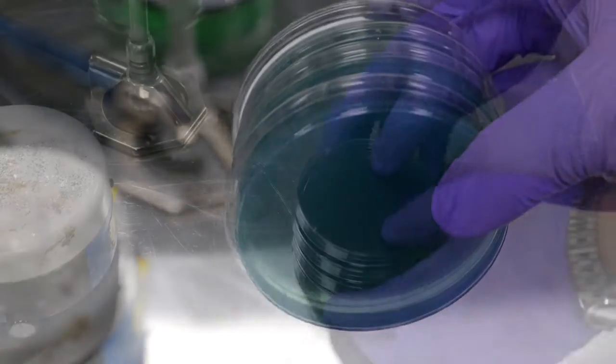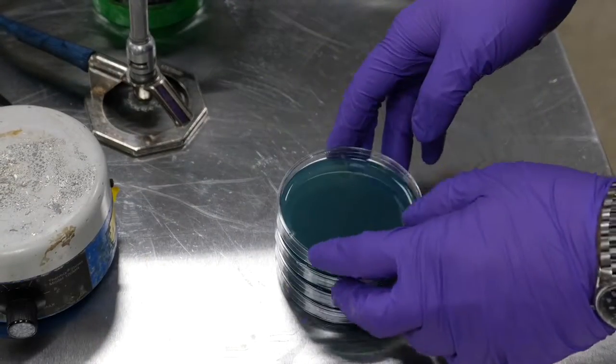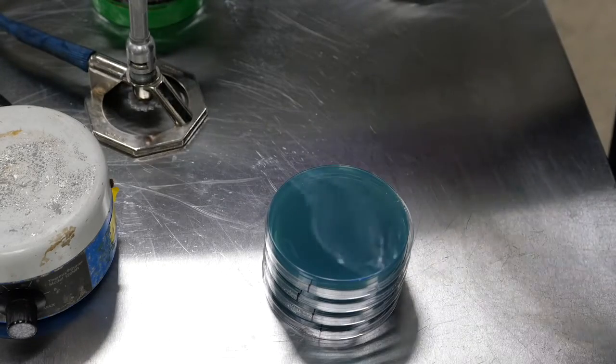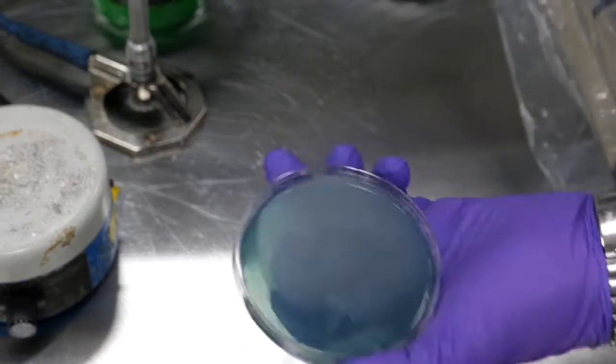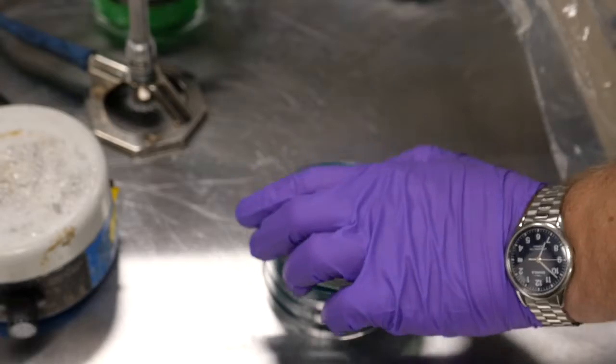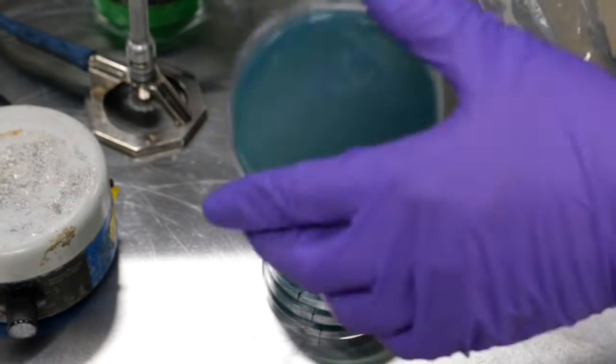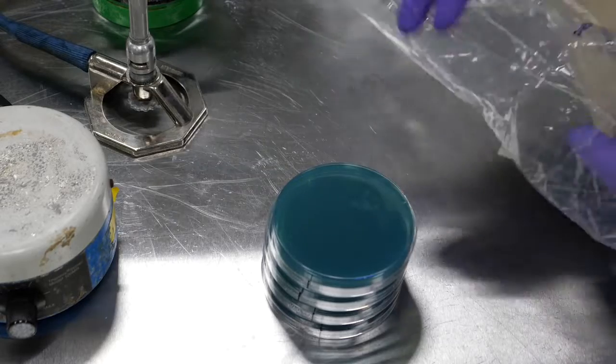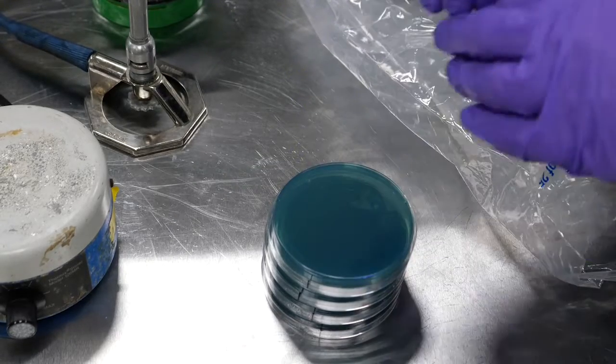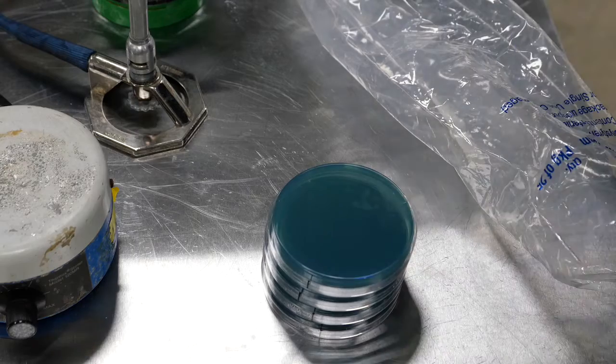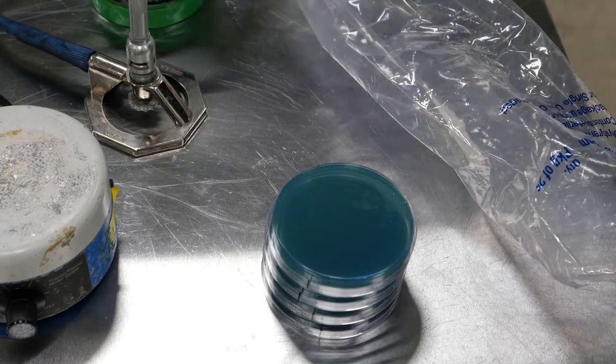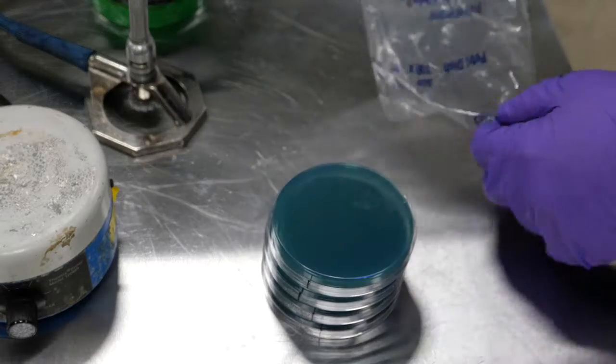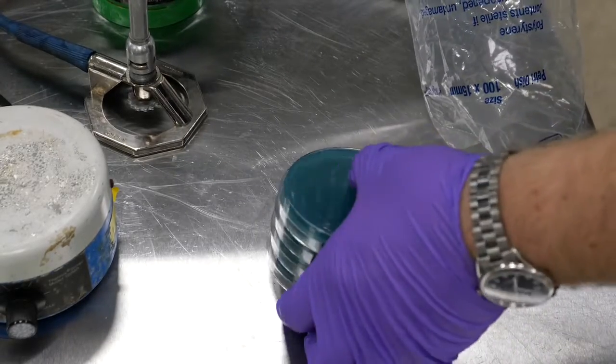So when the plates are fully solidified, what you want to do is store them bottom side up. This helps prevent any condensation from getting onto the surface of the agar because there will be some condensation when those plates solidify. I also do recommend holding these at room temperature for one or two days after pouring, just in case there has been any contamination. You'll be able to start seeing some microbial growth at that point. The last thing you want is a contaminated agar plate.